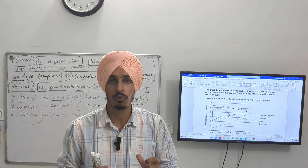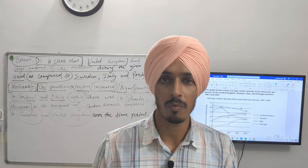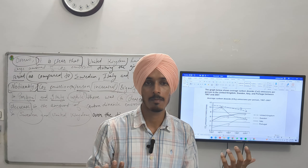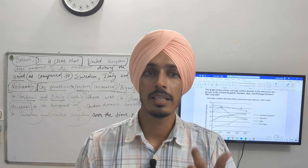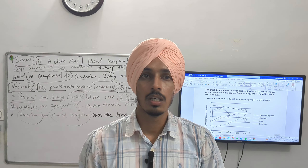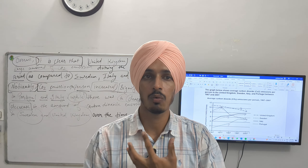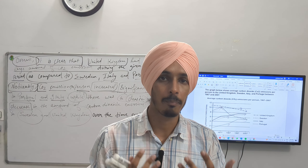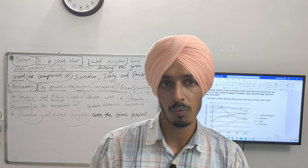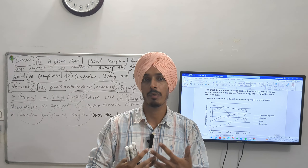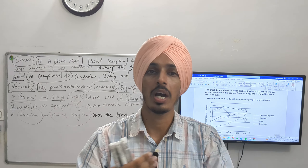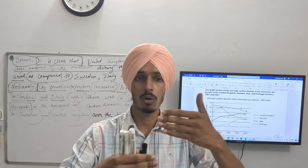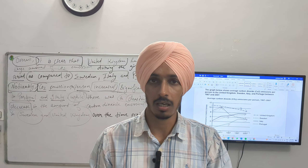Now we are going to do body paragraph one and body paragraph two. These two are the detailed paragraphs — not like the overview where we have not mentioned actual numbers or percentages. In these paragraphs we have to give the detailed description of everything, including the actual amount of CO2 emission. These two paragraphs are done according to the overview — whatever we compared in the overview must be compared in body paragraph one and body paragraph two, so your essay remains in cohesion and coherence.